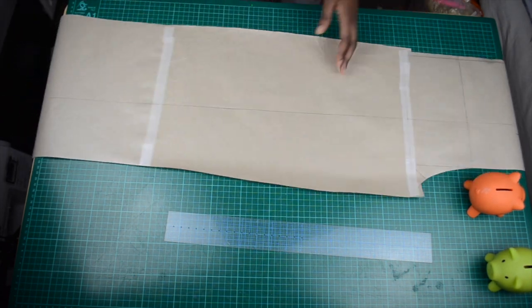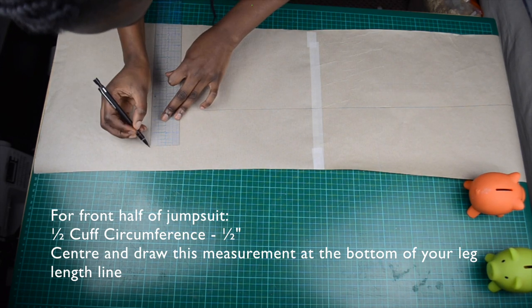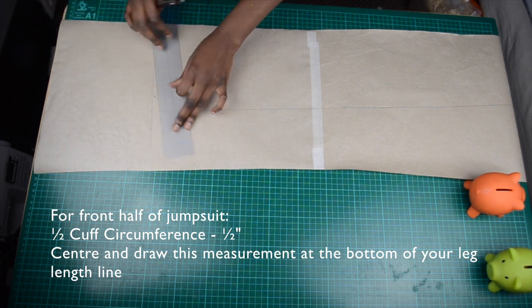For the front half, take your calf circumference and divide it by two, then minus half an inch. Center this measurement at the bottom of your line and draw it.